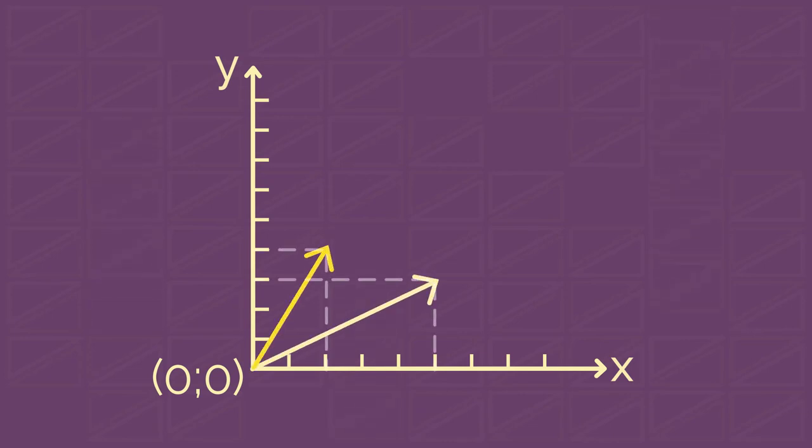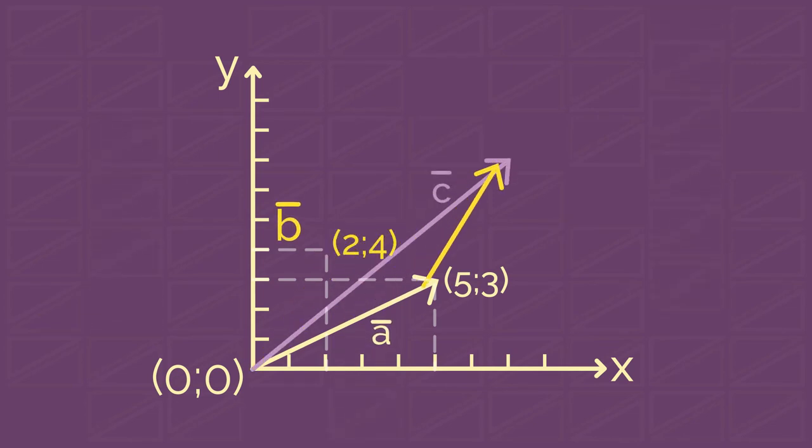We can also just add corresponding coordinates of two vectors and get the coordinates of the sum vector. For example, if we have vectors A with coordinates (3,5) and B with coordinates (4,2), then C equals A plus B. And so we have the coordinates of vector C, which is (7,7).